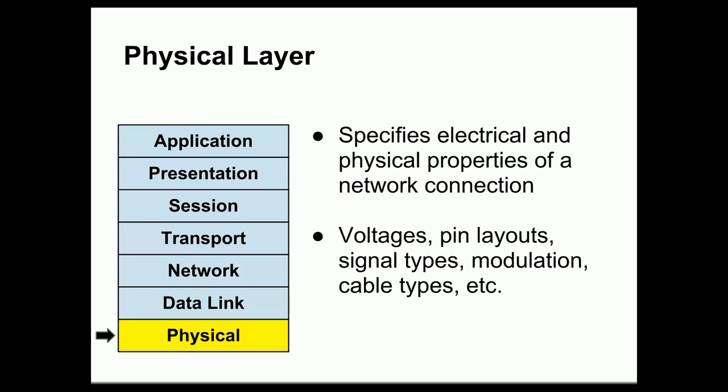At the lowermost layer we have the physical layer, at the bottom of the OSI model. This layer specifies the electrical and physical properties of a network connection, including voltages used by the connection, pin layouts for how different voltages connect to circuits, types of signals and modulation, and types of cable. Not all physical layer connections are electrical — for example, we have radio wave connections with wireless networking and optical physical layers for fiber optic connections.